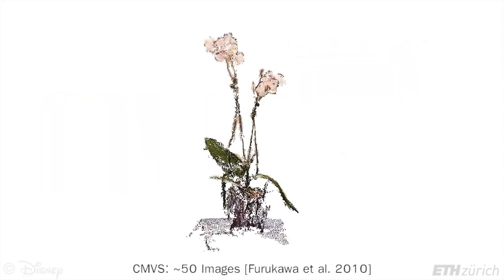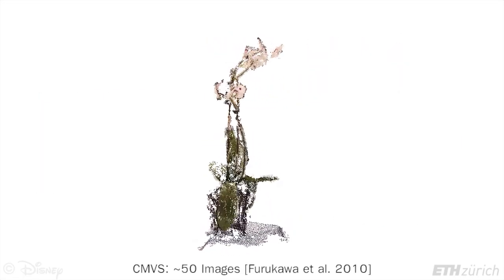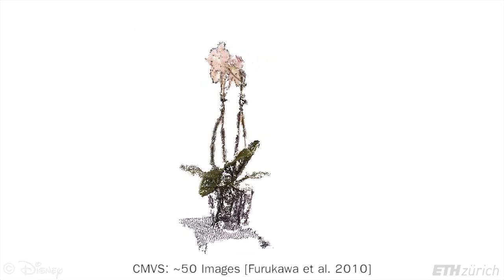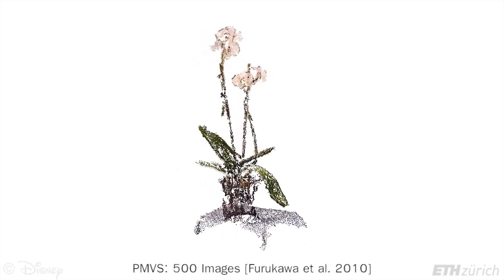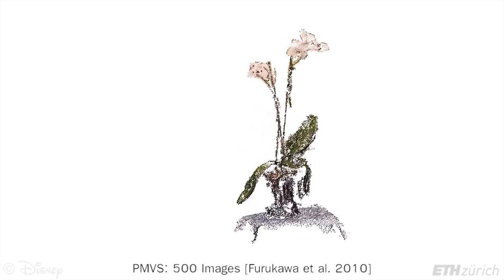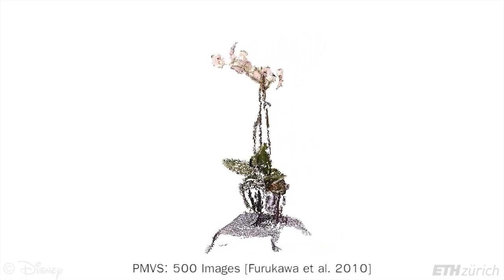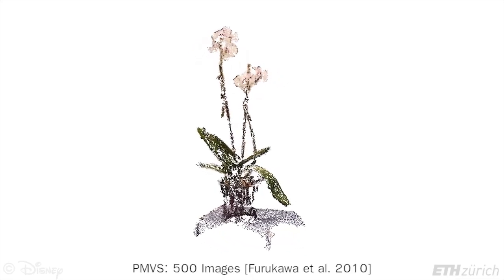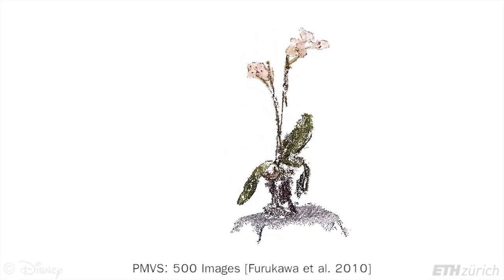Traditional multi-view stereo approaches fail to generate accurate results on complex objects due to the inherent trade-off between ambiguities from sparse viewpoint sampling and inaccuracies due to small baselines. Here we see how the quality of a classic multi-view stereo approach actually degrades slightly when additional images are added — one of the stems is missing and there are more holes in the flowers. An additional problem is that traditional approaches are computationally expensive, which means they are unable to take advantage of all the information contained in a denser video sampling.